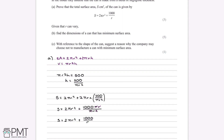There are three marks available for this question. The first mark comes from setting πr²h equal to 500, acknowledging that 500 millilitres is the volume. The second method mark comes from substituting h = 500/(πr²) into the surface area equation. The final mark comes from simplifying to reach the given answer.